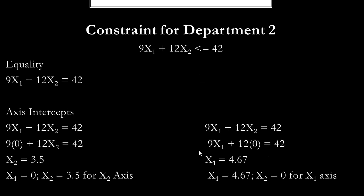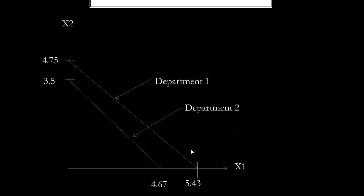Now we repeat the process for our second constraint, department 2. And we plot the graph for department 2, the second constraint.